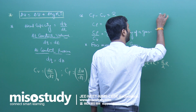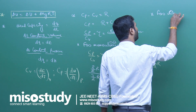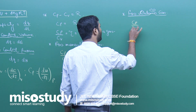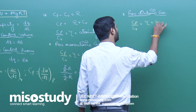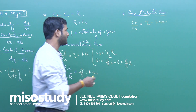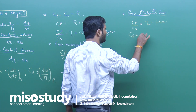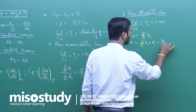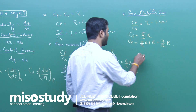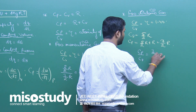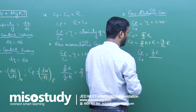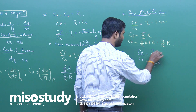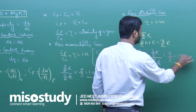For a diatomic gas, Cp upon Cv equals gamma, which is equal to 1.40. In this case, Cv is equal to 5/2 R, and Cp is equal to 5/2 R plus R, which equals 7/2 R. So Cp upon Cv equals 7/2 R divided by 5/2 R, giving 7/5, which is 1.40.